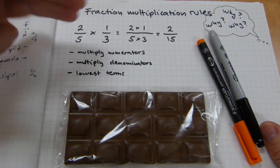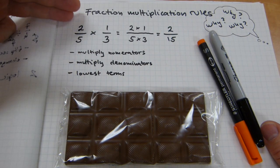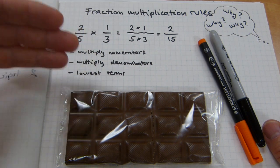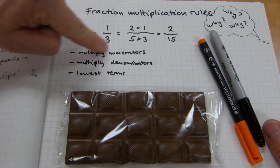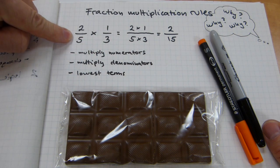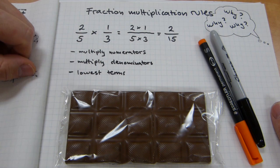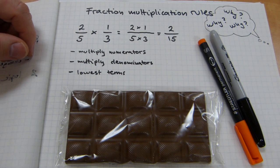You might have wondered at one point in your math studies, what's the reason behind the weird rules of fraction multiplication? In this video, I'll try to shed some light on it. I'm going to be using this fraction multiplication example that I've written here, 2 over 5 multiplied by 1 over 3, to explain two of the reasons behind the rules.